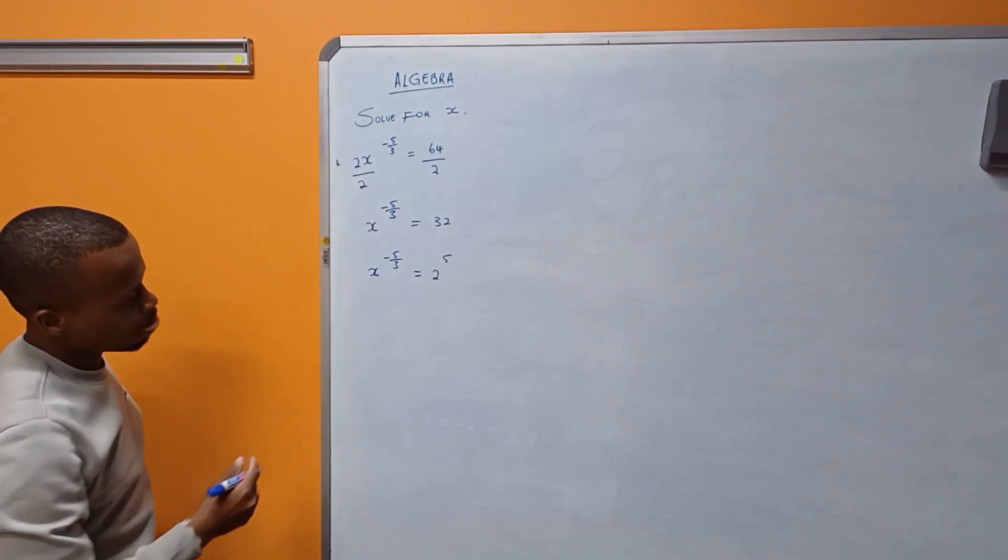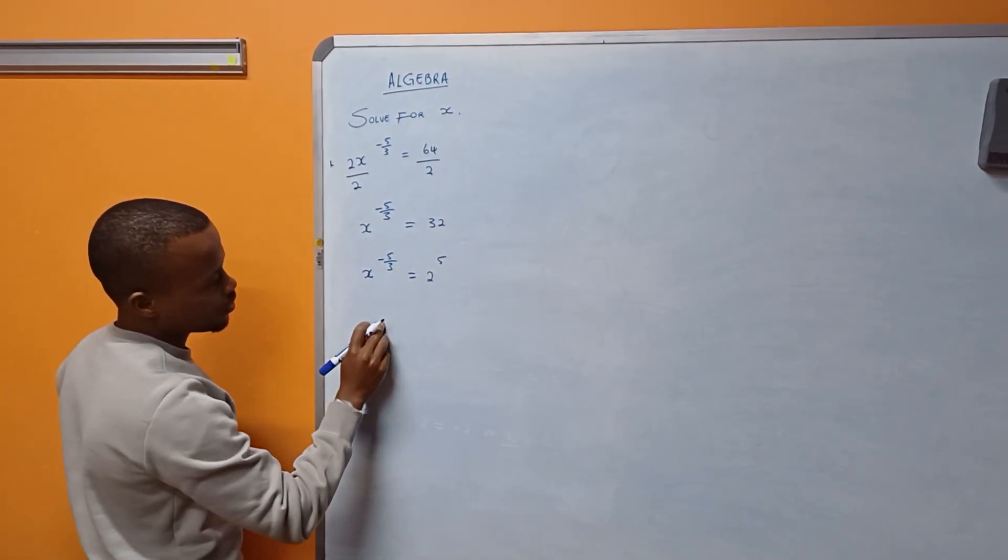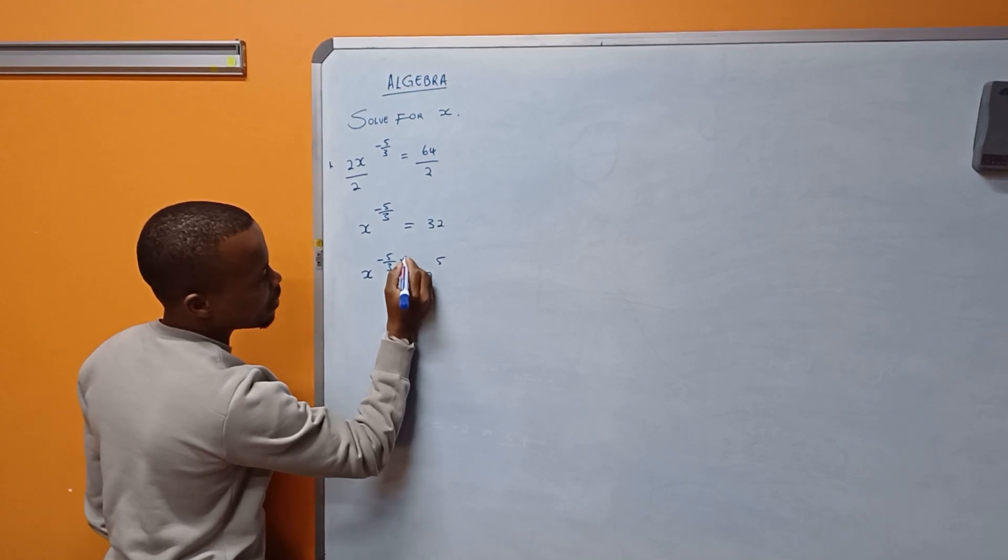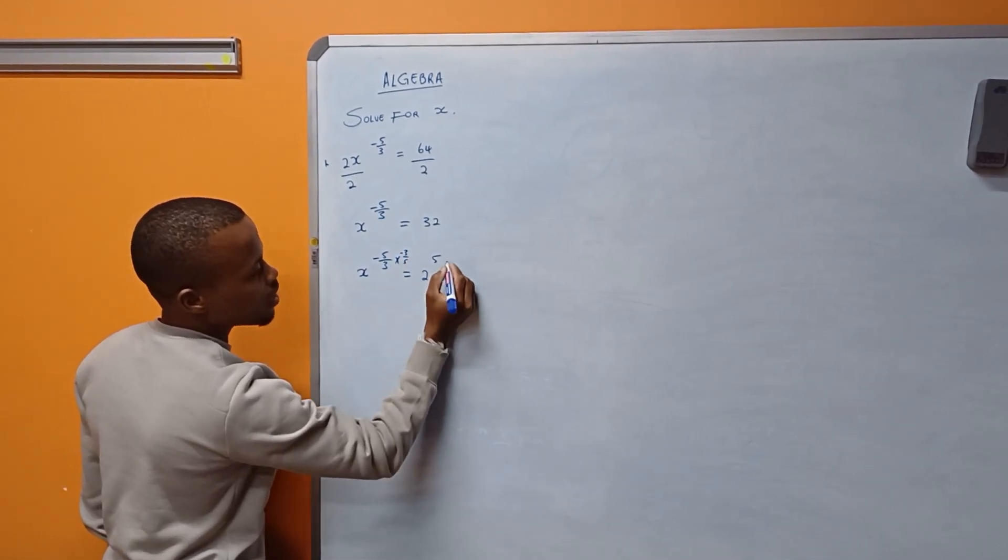Looking carefully here, I can rationalize this one by multiplying by minus 3 over 5 for each side.